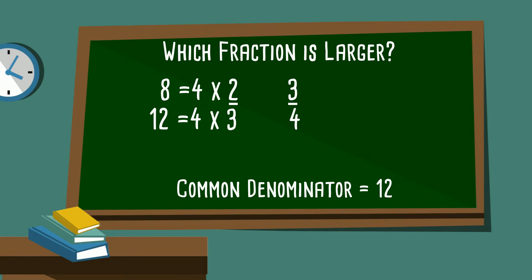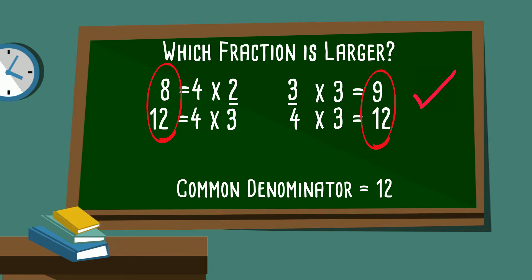On the other side, four goes into twelve three times, so four times three is twelve, and three times three is nine. Now, since they are renamed, it's easy to tell which fraction is larger. Nine-twelfths is larger than eight-twelfths, so three-fourths is larger than two-thirds.